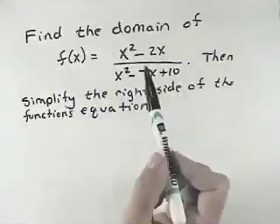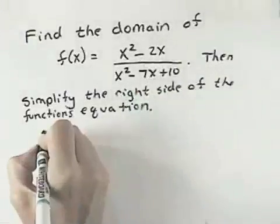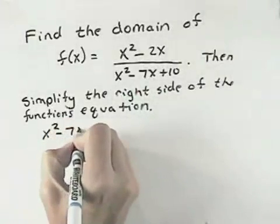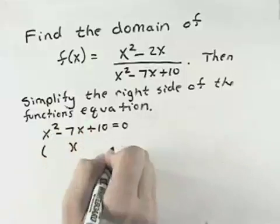So let's start by finding the points where the denominator equals zero. Since our function is x squared minus 2x over x squared minus 7x plus 10, we want the points for which the denominator equals zero because those cannot be part of our domain.